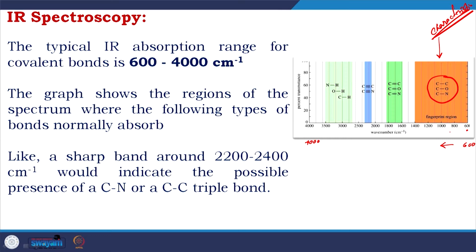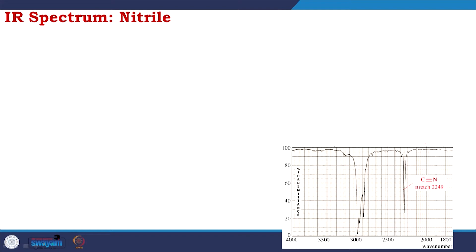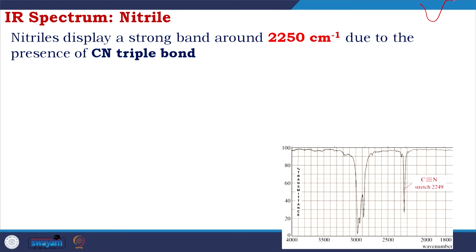A broad band around 2200 to 2400 cm⁻¹ would indicate the possible presence of a C≡N or C≡C triple bond. Nitriles display a strong band around 2250 cm⁻¹ due to the C≡N triple bond, shown here at around 2249 cm⁻¹. This band has a sharp pointed shape similar to the alkyne C≡C, but because C≡N is more polar, this band is stronger.